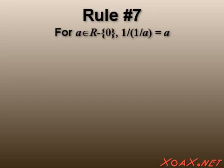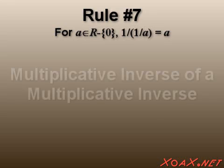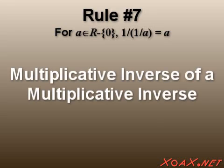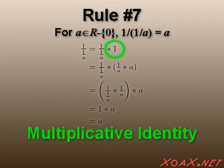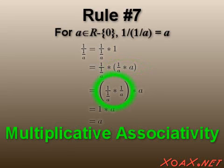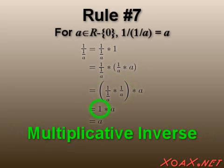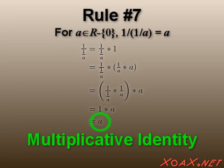The seventh rule is similar to the sixth. It is the multiplicative inverse of a multiplicative inverse. We begin with the multiplicative identity. Next, we use multiplicative inverses. Then we use multiplicative associativity. This is followed by multiplicative inverses. Finally, we finish with the multiplicative identity.